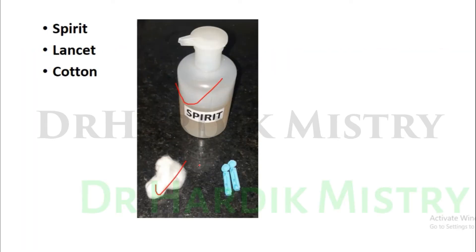Which are the apparatus required for cell pricking? Spirit, lancet, and cotton. Here is the spirit, this is the cotton, and this is the lancet. Why are we using spirit? It acts as a bactericidal and provides a sterile pricking area. Bactericidal means killing of the bacteria.